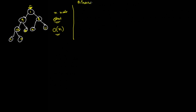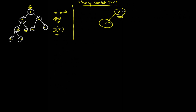In a binary search tree, we impose a restriction on where data items will be added. If there is a root node containing element x, then the left subtree will contain data less than x, and the right subtree will contain data greater than or equal to x. This way we can create a binary search tree where all data on the left is less than the root and all data on the right is greater than the root.